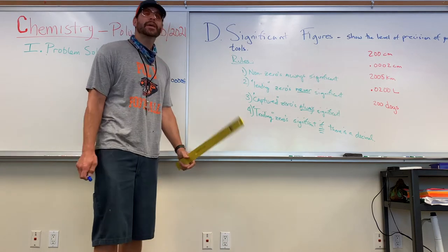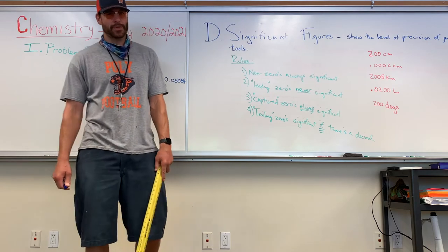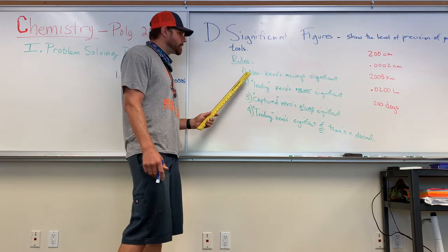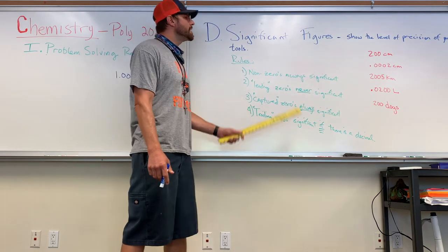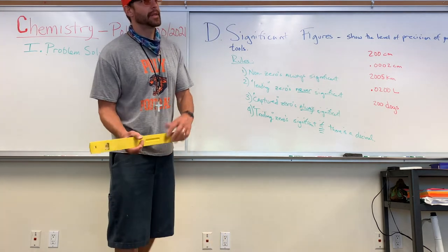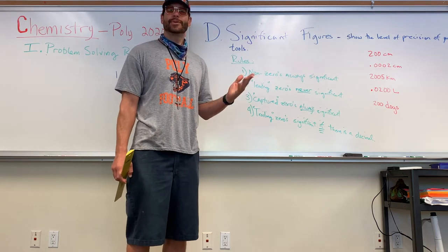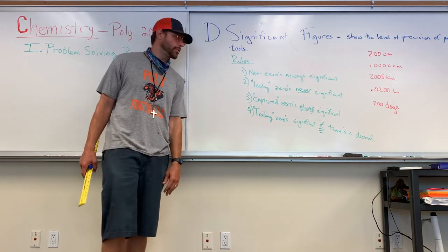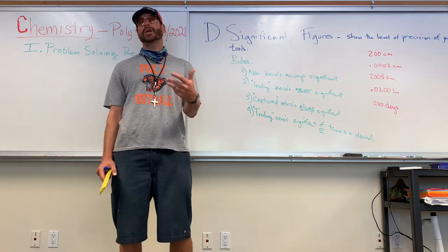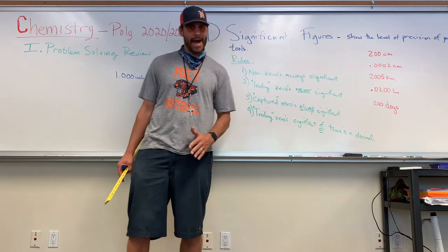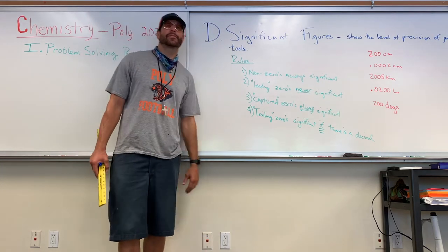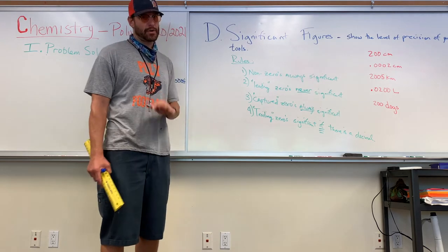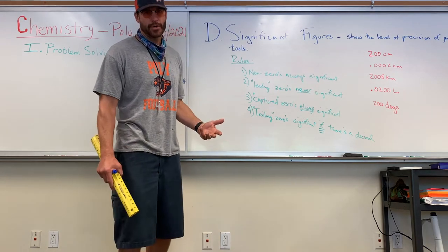Significant figures matter and will matter more and more as you advance in science courses. What are our rules for significant figures? Rule one: non-zeros are always significant — 1 through 9 are significant. How about zeros? Zeros fall under three different rules. Leading zeros are never significant — zeros that come before a non-zero are just placeholders, never significant, regardless of decimal placement.